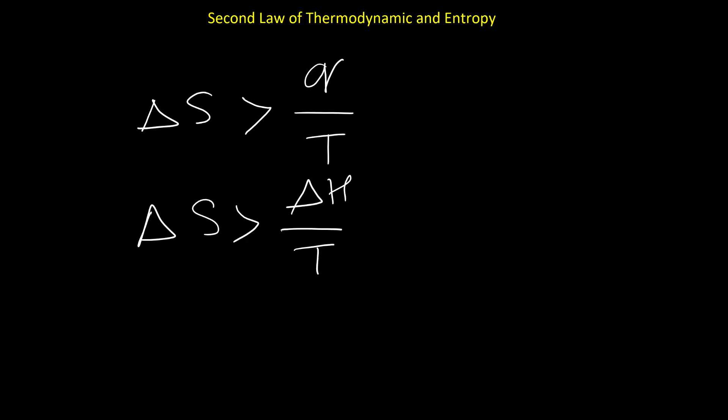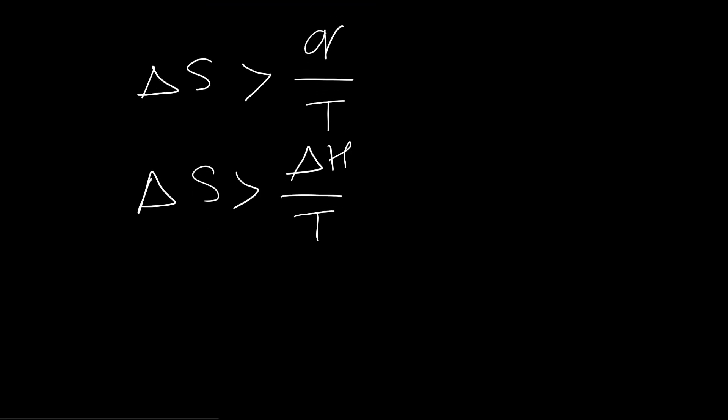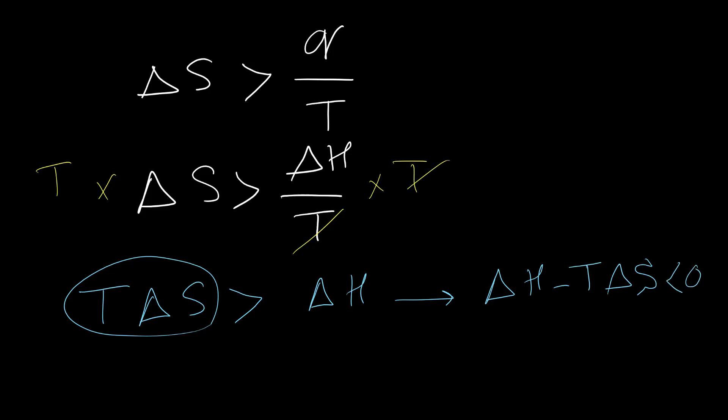This equation is a criterion for a spontaneous reaction, so I would like to modify it a little bit. I can multiply both sides of this equation by T, then T delta S is greater than delta H. And if I take this one to the left side, I can rewrite it in this form. This term is a criterion for spontaneous reactions and we can name this term as delta G, and we call it free energy, Gibbs.